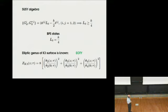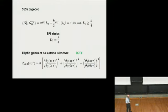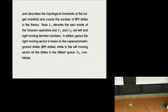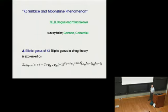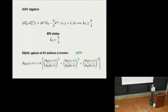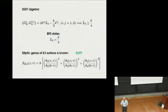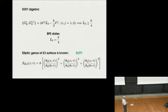BPS states are those which lie exactly at the bottom of the spectrum, at energy 1/4. Something special happens at these states: they are not cancelled between bosons and fermions, while all states at higher energies do cancel. We want to compute this quantity — the elliptic genus — by summing over the infinite-dimensional Hilbert space, which looks complicated. But sometimes, if we look at a very special situation where the K3 surface has a special shape, it is possible to carry out the computation.